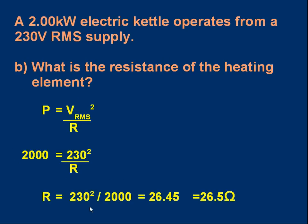What's the resistance of the heating element? Using P = V²/R with the RMS voltage: 2,000 = 230² / R, so rearranging gives R = 230² / 2,000. To 3 significant figures that's 26.5 ohms.